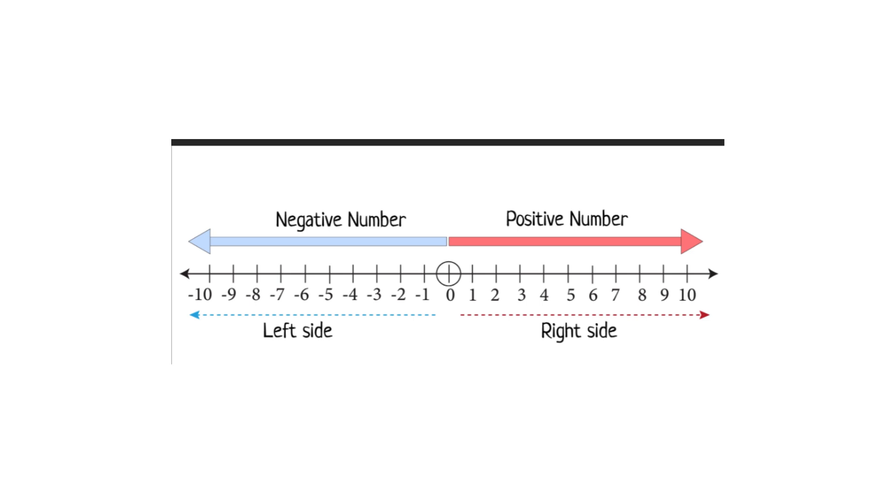Here we have a number line to demonstrate our point. We have the negative numbers, we have zero in the middle. So if we're counting backwards from zero to minus one, minus two, minus three, these numbers are getting smaller.